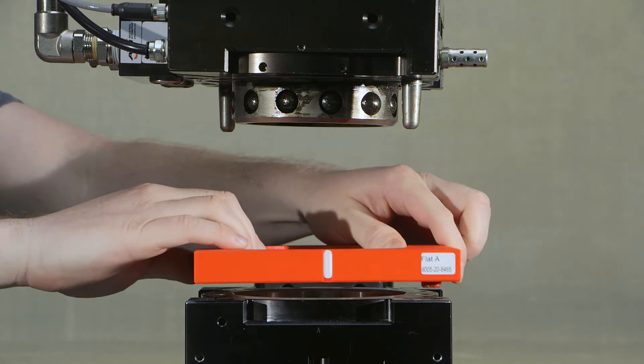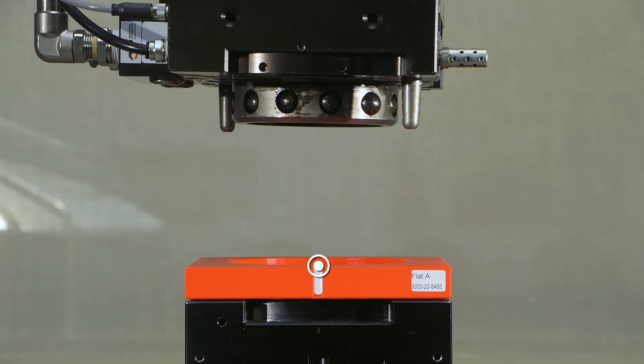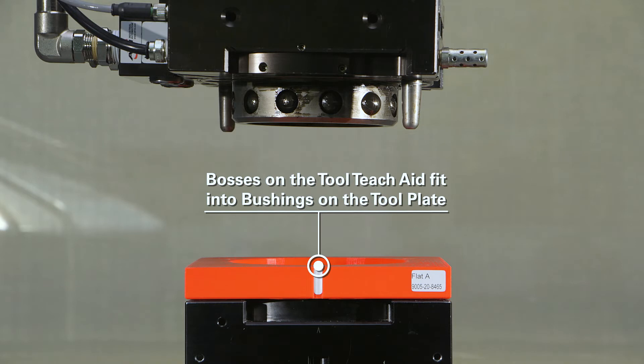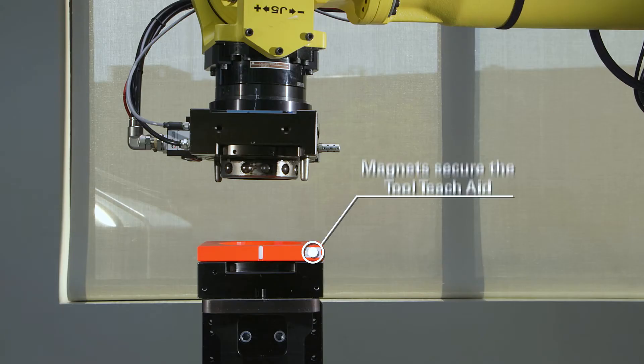Mount the tool side T-Jade to the tool changer tool plate by inserting these bosses into the alignment bushings of the tool changer tool plate. Magnets in the body of the tool side T-Jade will secure it to the tool changer tool plate.